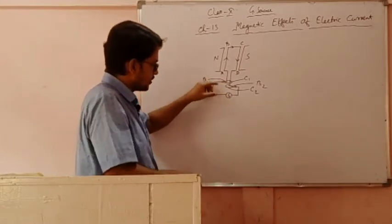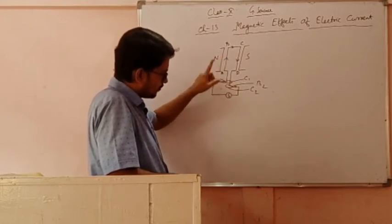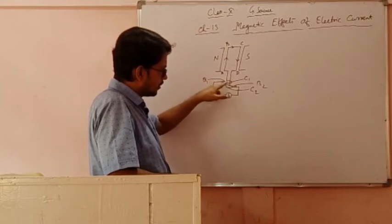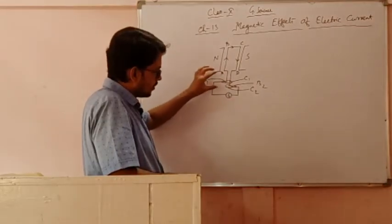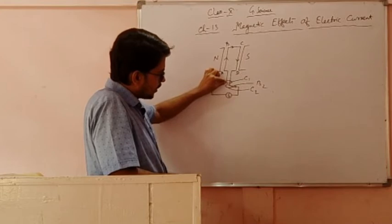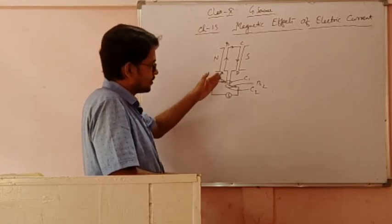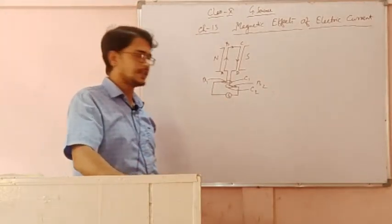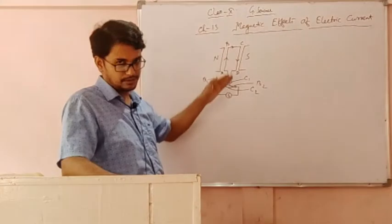We can also make it a DC generator. Instead of using two commutators, if we use only a single commutator, then only one direction will be maintained. With two commutators, two directions are maintained — that is AC. With one commutator, only one direction is maintained — that is DC. Nowadays all generators are AC generators, so two commutators are used. By joining C1 and C2 and making them one, we can convert AC to DC. Using Fleming's right hand rule, we can easily understand how the direction of current is produced.